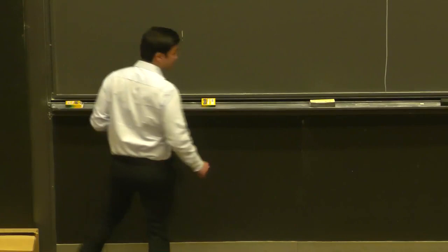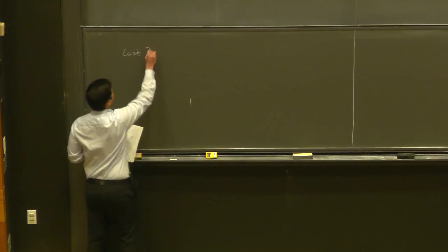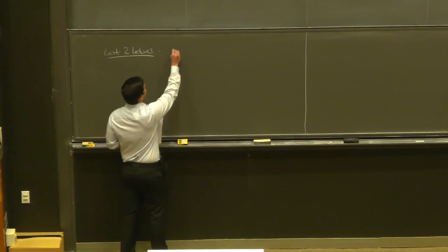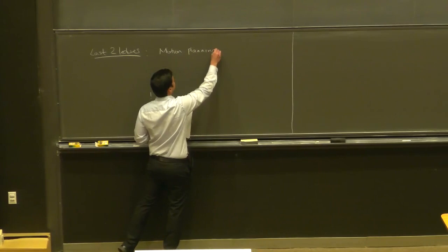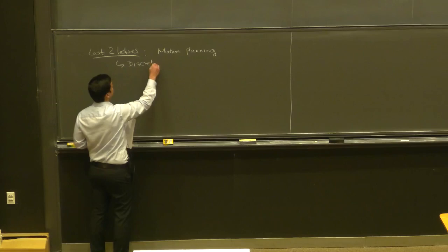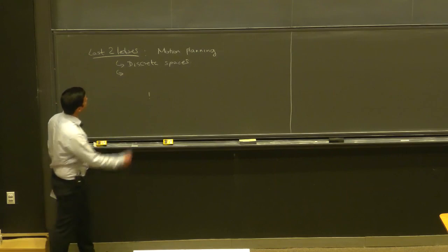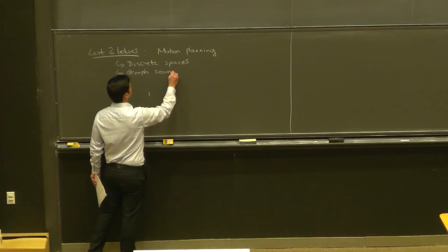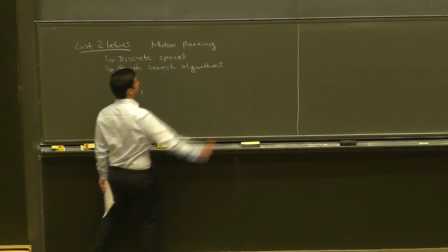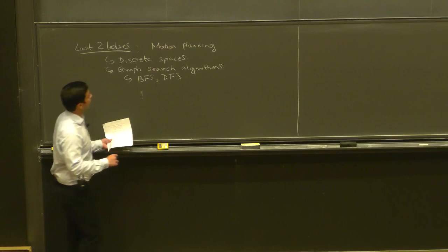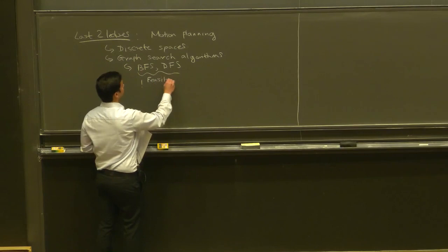Here's a quick reminder of the concepts covered in the past two lectures. The main set of ideas has to do with motion planning, specifically motion planning in discrete spaces. So far on this module on motion planning, we've covered four different algorithms, and these are all graph search algorithms. Specifically, we looked at BFS (breadth-first search) and DFS (depth-first search) two lectures ago.